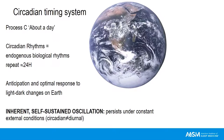Circadian is Latin for 'about a day,' also known as process C. Circadian rhythms are any endogenous physiological process that repeats on the order of approximately 24 hours. The likely reason we have circadian rhythms is so organisms can anticipate and optimally react to light-dark changes due to Earth's rotation every 24 hours. The key to understanding circadian rhythms is that these are truly inherent, self-sustained oscillations — they persist in the absence of time cues and light-dark changes. These are circadian, not diurnal.